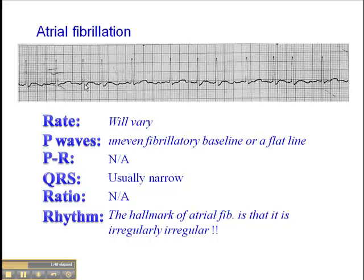When you see a rhythm that's irregularly irregular without clearly discernible P waves anywhere, you're probably dealing with an atrial fibrillation. Remember the age category — typically AFib we see in the elderly population, although sometimes you'll see it with severe alcohol intoxication, they call it holiday heart, and you'll see it sometimes in young people with underlying cardiac infections, myocarditis, pericarditis, those kinds of things as well.